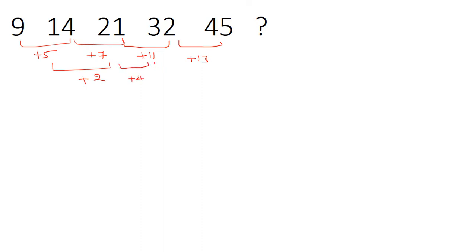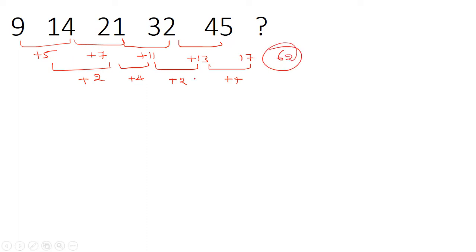The second differences alternate: 2, 4, 2 — so the next must be plus 4. That means the next first-level difference is 13 plus 4 equals plus 17. Adding plus 17 to 45 gives 62. So our answer is 62.